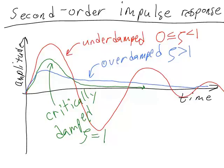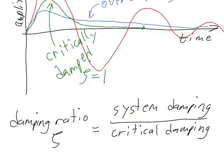When we call this letter the damping ratio, the thing that it is a ratio of is the amount of damping in the system divided by the amount of damping that the system needs in order to be critically damped. Remember that critical damping means that the system reaches its steady state as fast as possible without having any oscillations.